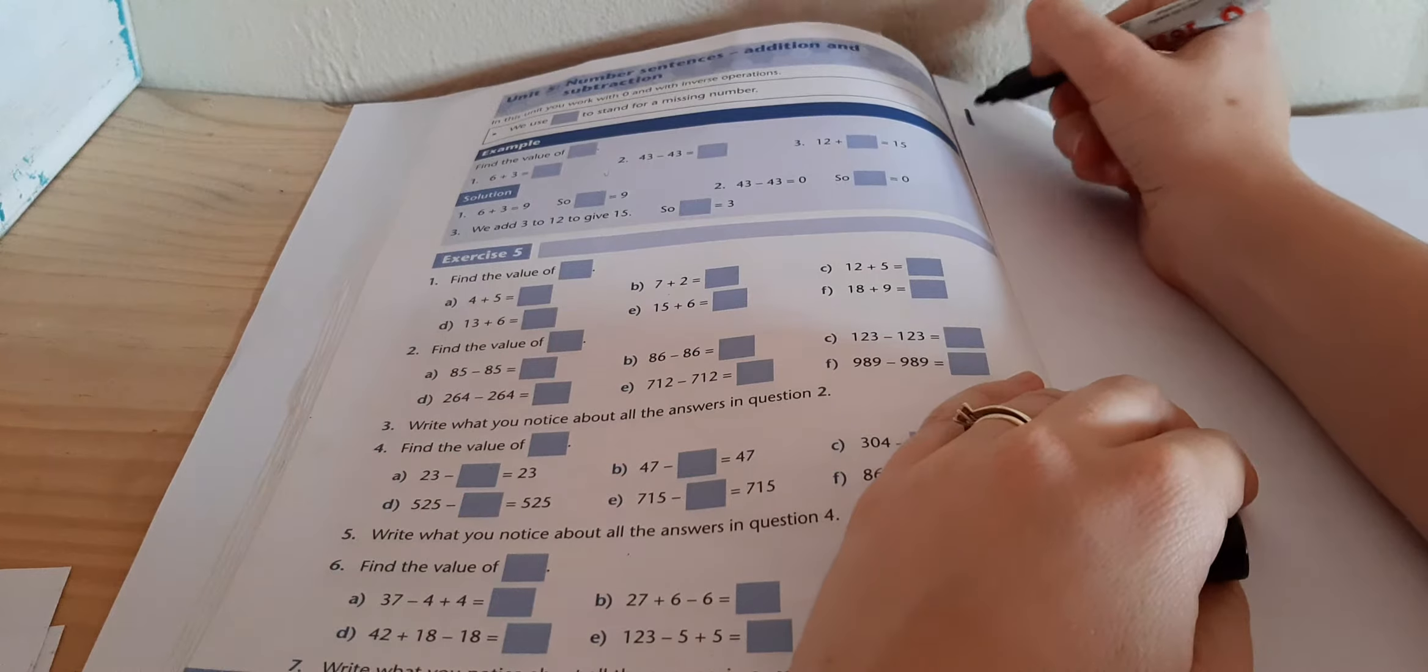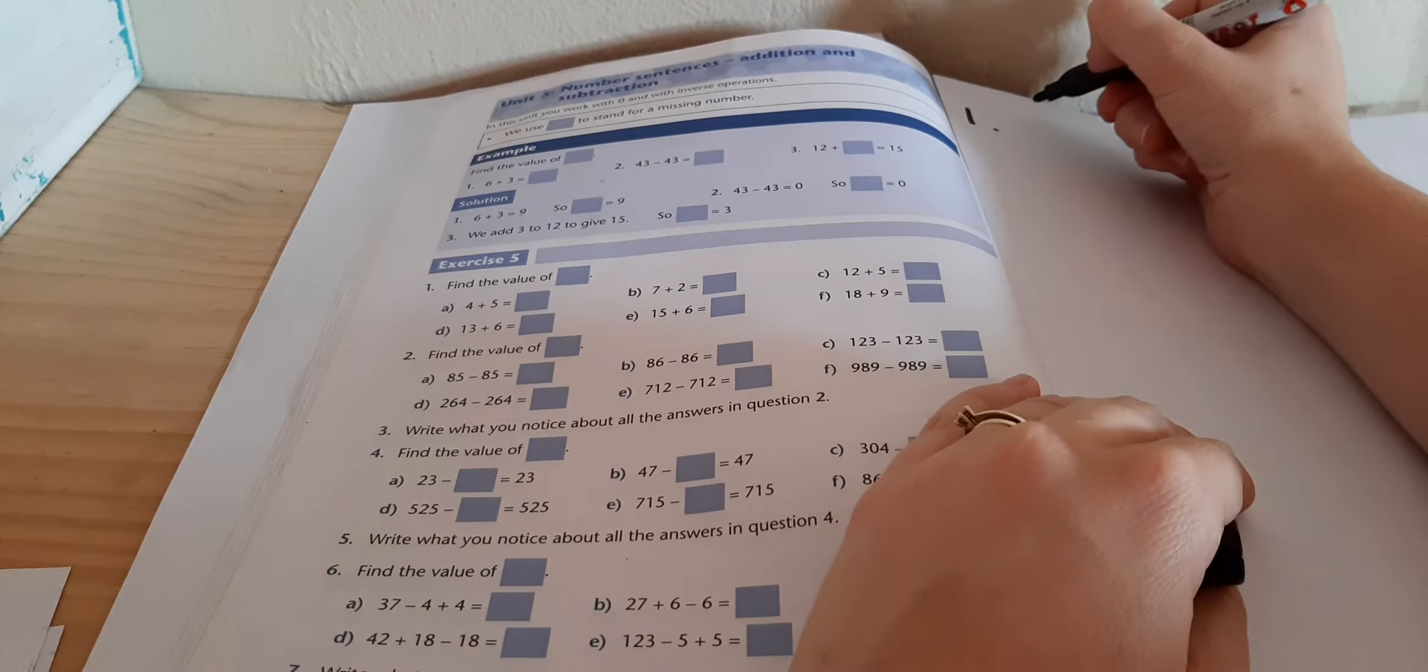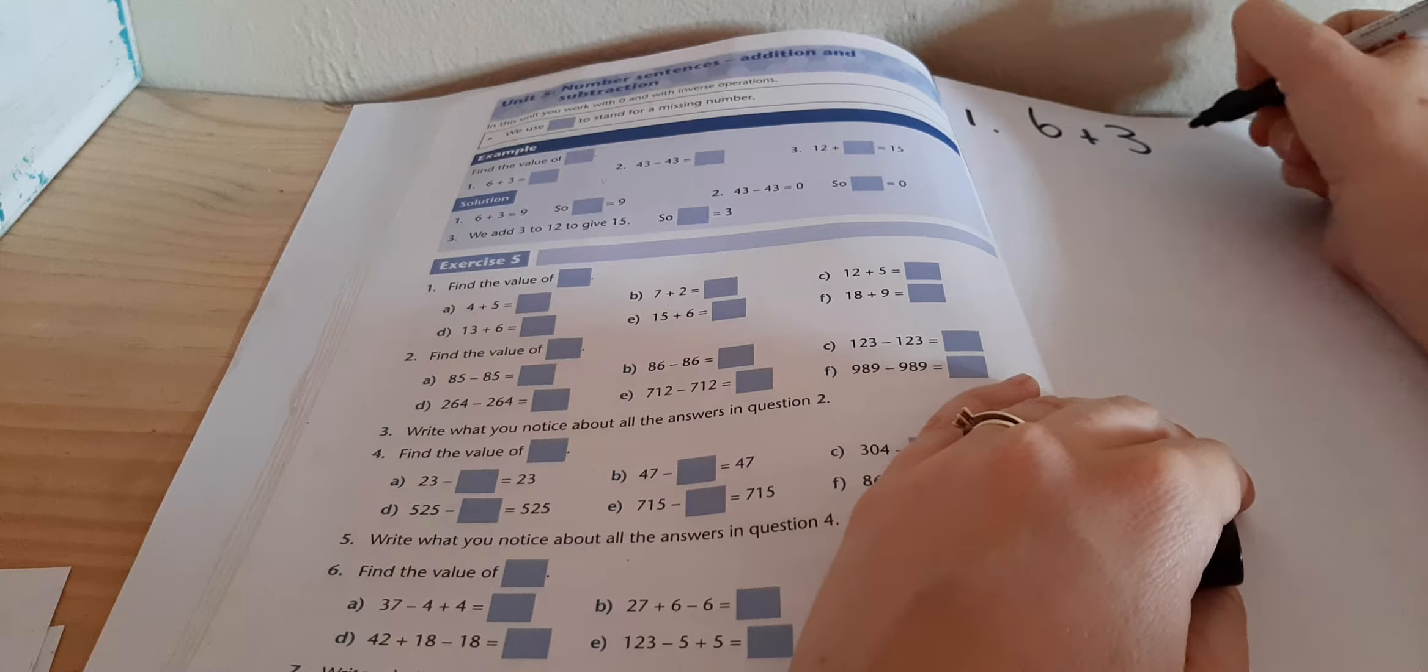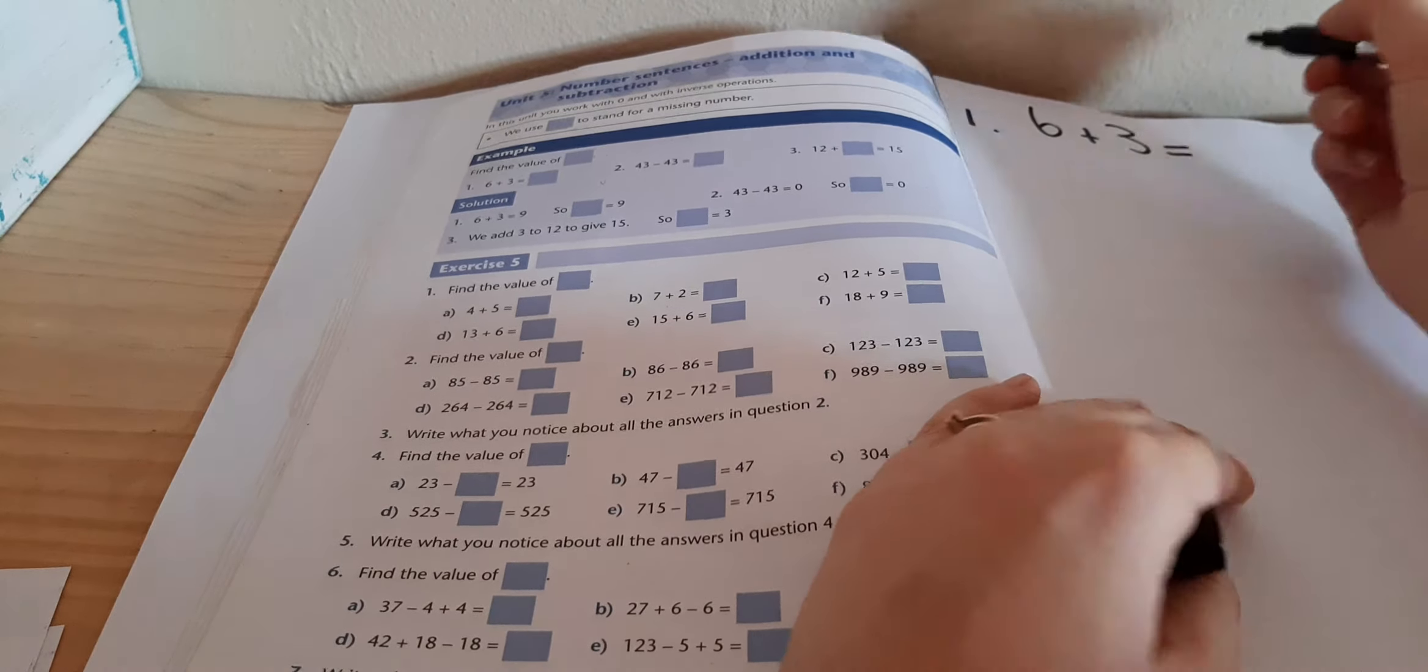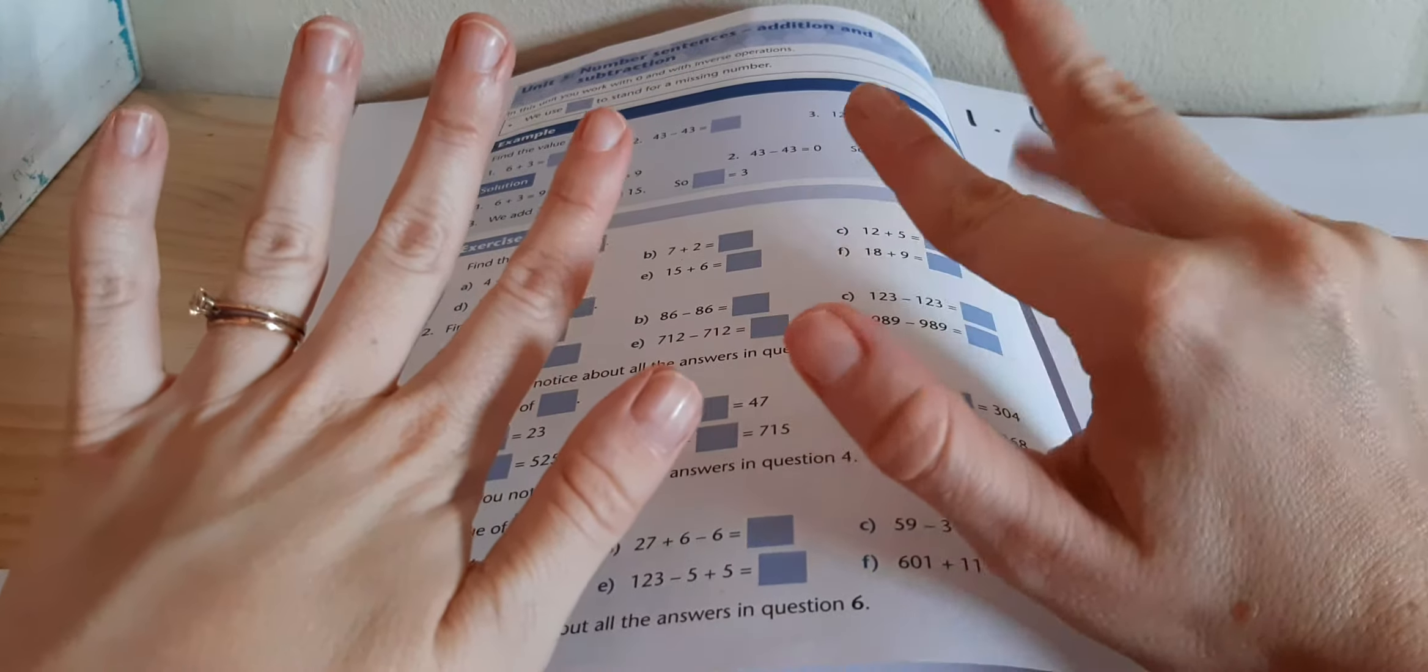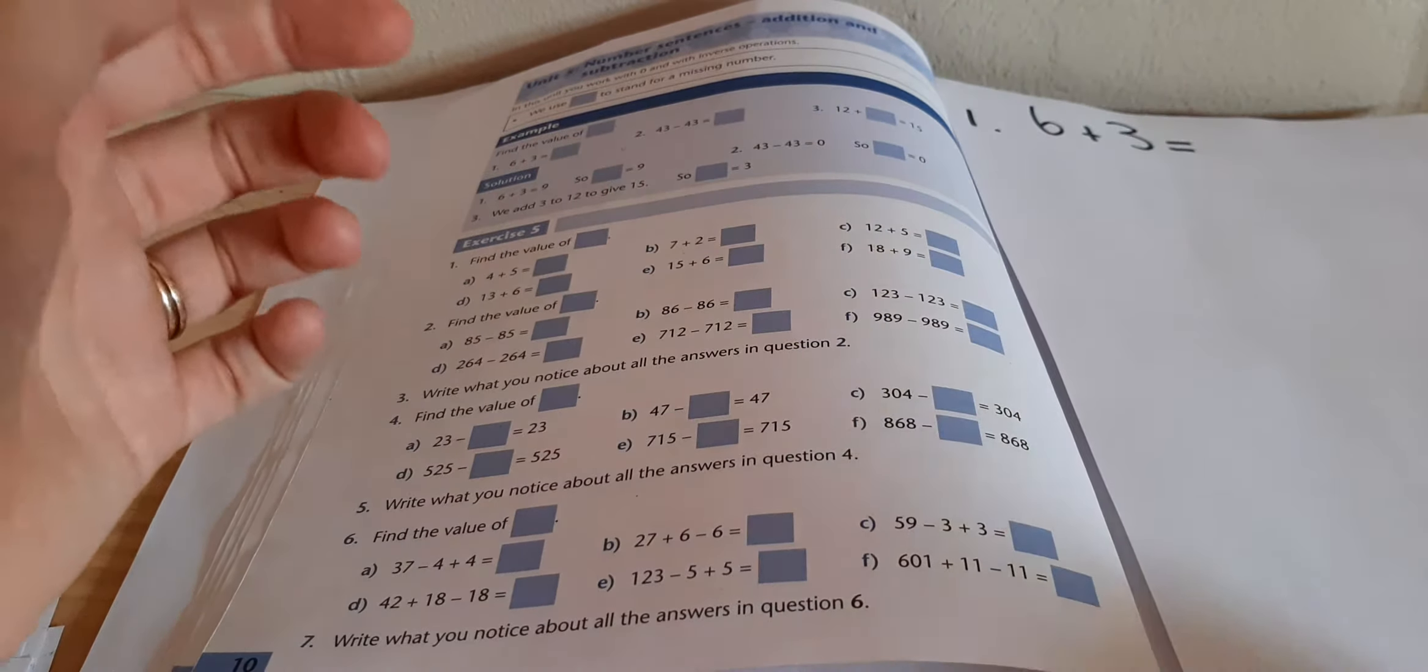When you write your answer in your textbook, you're going to write, say, number one in the margin and you're going to write the whole question out. 6 plus 3 equals. Now you can use your fingers. You can show 6 fingers plus another 1, 2, 3 and then count the number of fingers and you should get 9.